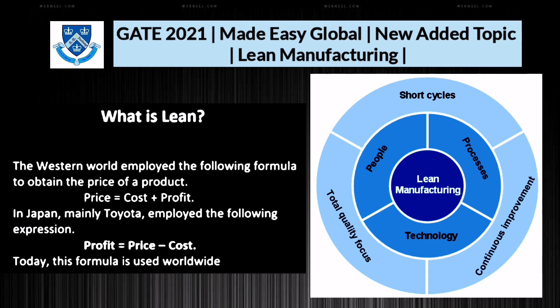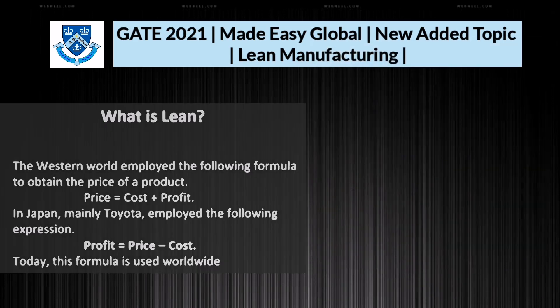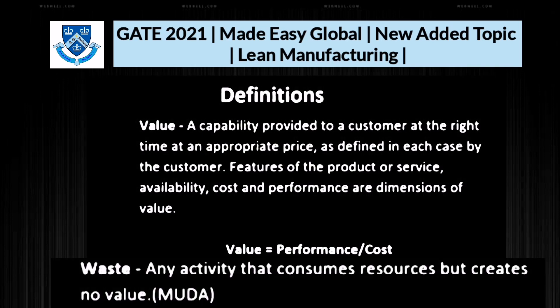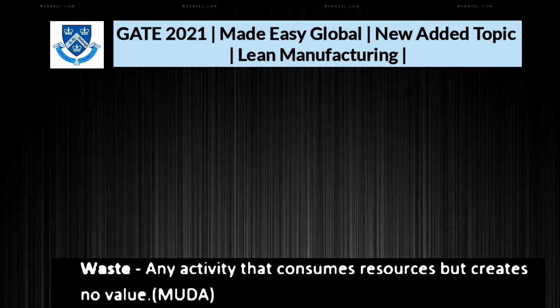First, what is lean? In the western world, price is defined as cost plus profit. But nowadays, in Japan — mainly Toyota — the expression is: profit is equal to price minus cost. So basically, we have to reduce cost to increase profit. Value is defined as performance divided by cost, and waste is any activity that consumes resources but creates no value, also known as Muda.